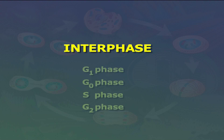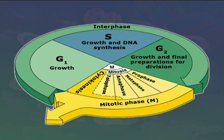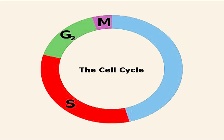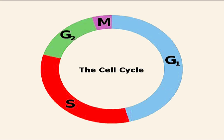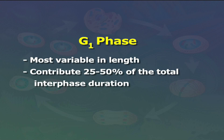G1 phase is the most variable period of the cell cycle. The period between the end of telophase and just before entry into S phase is called G1 phase. The S phase, G2, and mitotic periods are relatively constant in cells of the same organism, but the G1 period is the most variable in length. It may contribute 25 to 50 percent of the total interphase duration, and in some cells G1 may be very short or absent depending on physiological condition.